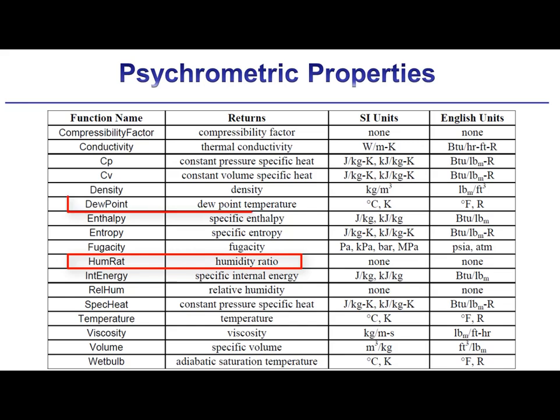Additional psychrometric-specific functions include the dew point temperature (dew point) and the wet bulb temperature (wet bulb). The dew point temperature is defined as the temperature at which water will condense when an air-water mixture is cooled at constant pressure. The wet bulb temperature refers to the temperature that a wetted material, such as a piece of cotton, would come to when it is exposed to humid air at a specified state. It is usually approximated as the adiabatic saturation temperature, which is the temperature that an air-water mixture would achieve if it were humidified adiabatically.